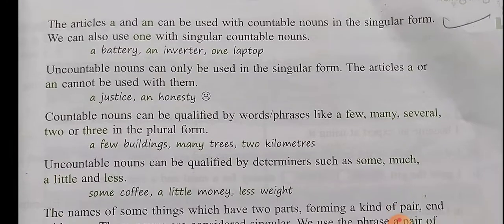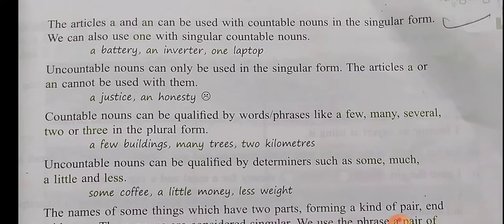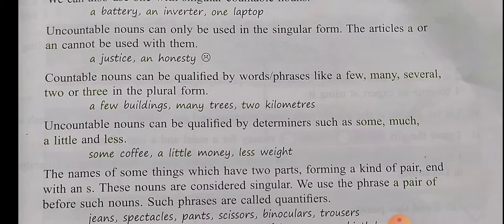The articles A and An can be used with countable nouns in the singular form. We can also use 'one' with singular countable nouns — a battery, an inverter, one laptop also. Uncountable nouns can only be used in singular form. The articles A or An cannot be used with them — for example, justice and honesty.